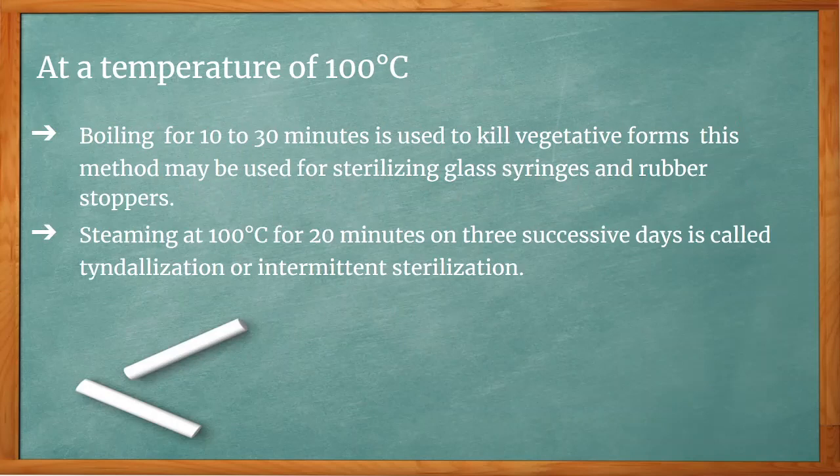At 100 degrees Celsius, boiling for 10 to 30 minutes is used to kill vegetative forms and may be used for sterilizing glass syringes and rubber stoppers. Steaming at 100 degrees Celsius for 20 minutes on three successive days is called tyndallization or intermittent sterilization.